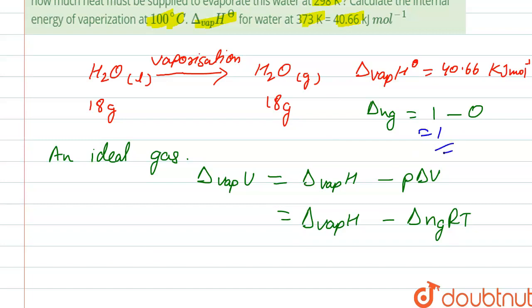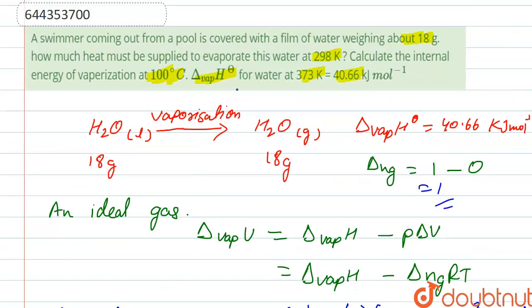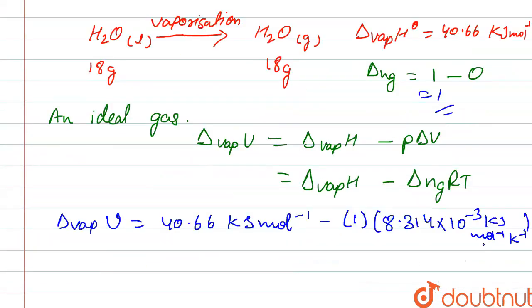So delta n_g is equal to one. We calculate delta vaporization of the internal energy. So it is equal to 40.66 kilojoule mole inverse minus 1 into 1 into value of R, that is gas constant, 8.314 into 10 to the power minus 3 kilojoule mole inverse kelvin inverse. The temperature is 100 degree celsius, we have to calculate at 100 degree celsius, so it is 373 kelvin.